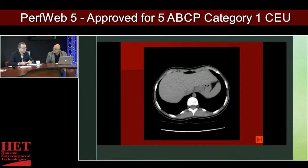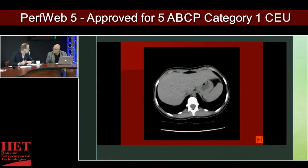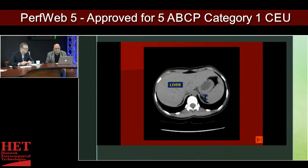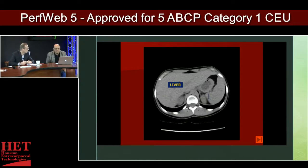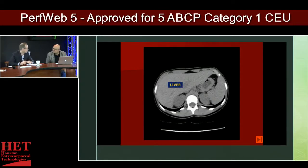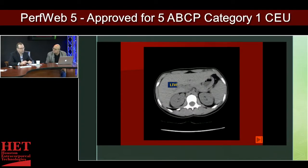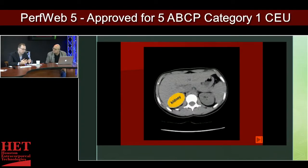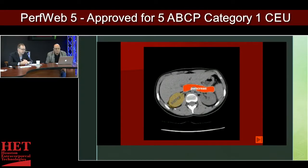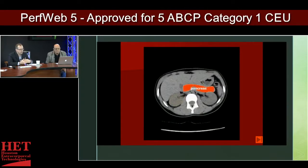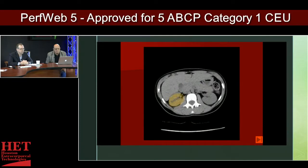With cardiac gated CTs, you're looking for valvular abnormalities, aneurysms within the heart, coronary anatomy — whether you're looking at bypasses or the native vessels. Depending on what you're looking at, the protocols, how the scan is taken, and the depth of the cuts can all be different.